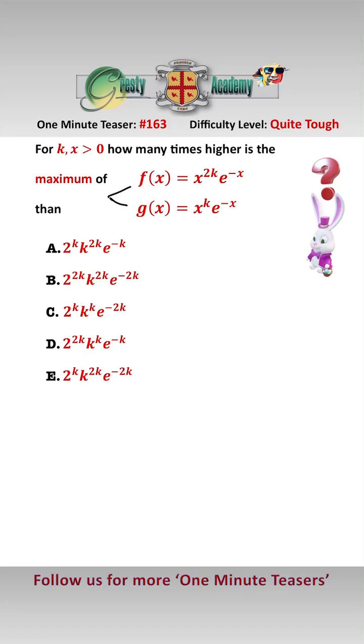So to find the maximums we clearly need to differentiate. f'(x) using the product rule equals 2k x^(2k-1) times e^(-x) minus x^(2k) times e^(-x). And let's put that equal to 0 to find the maximum.